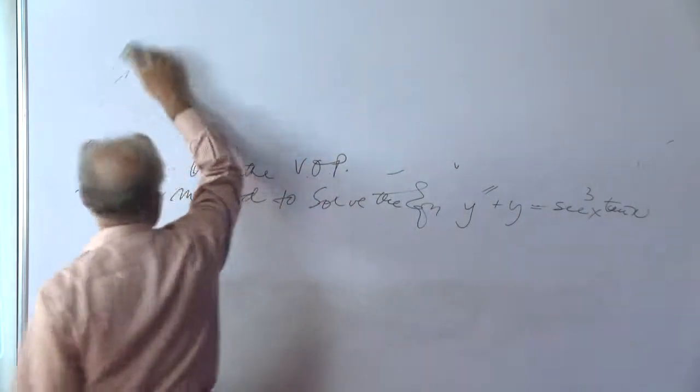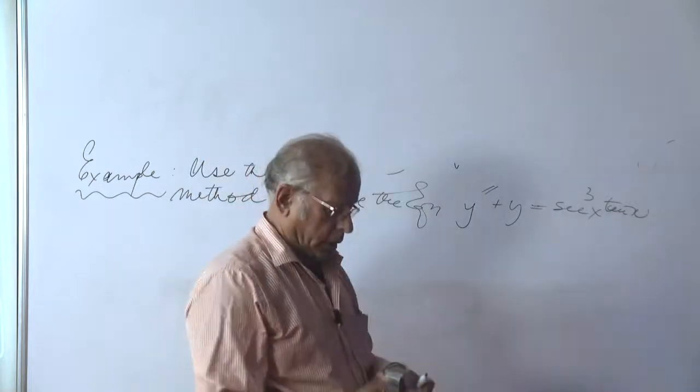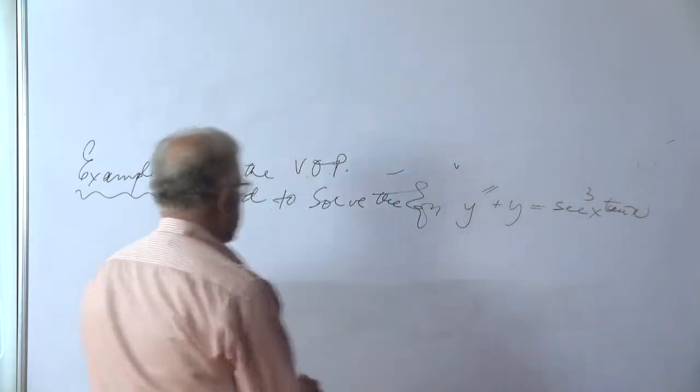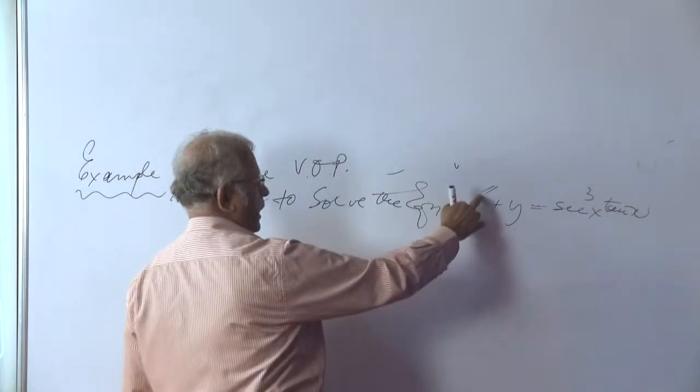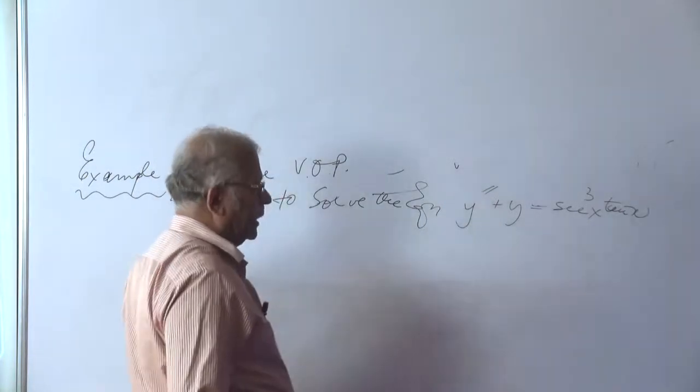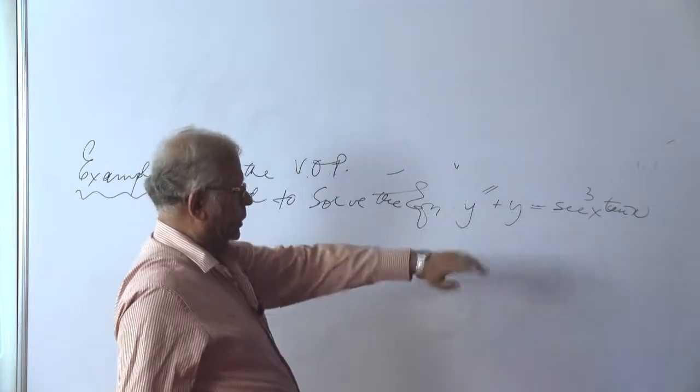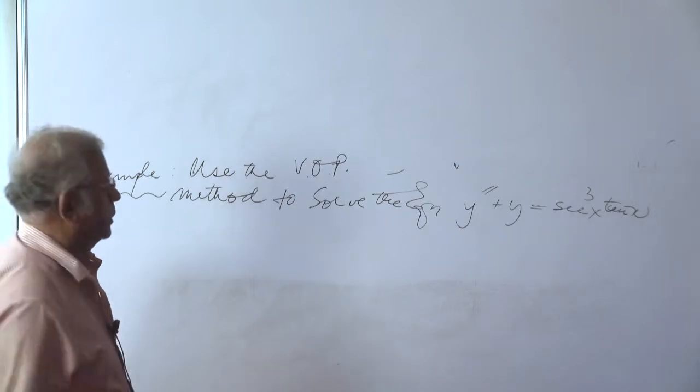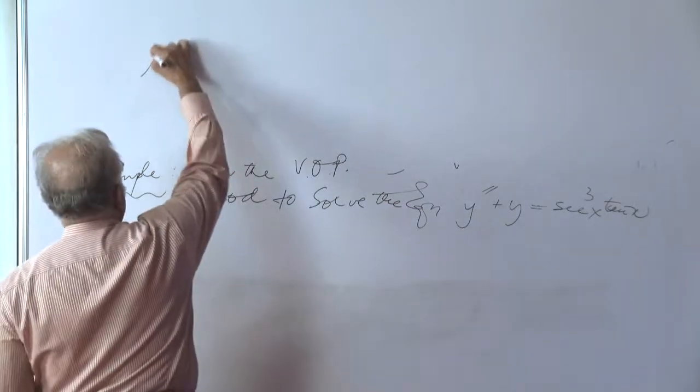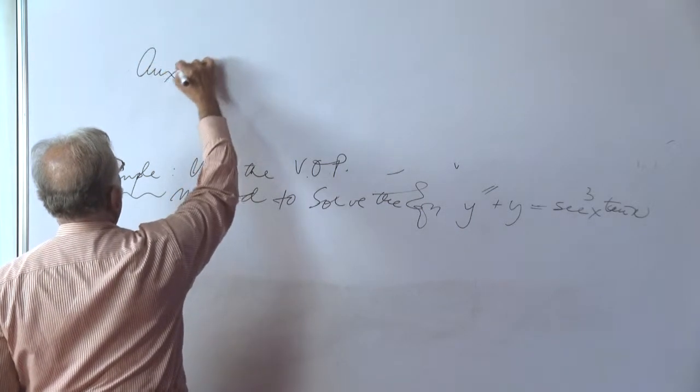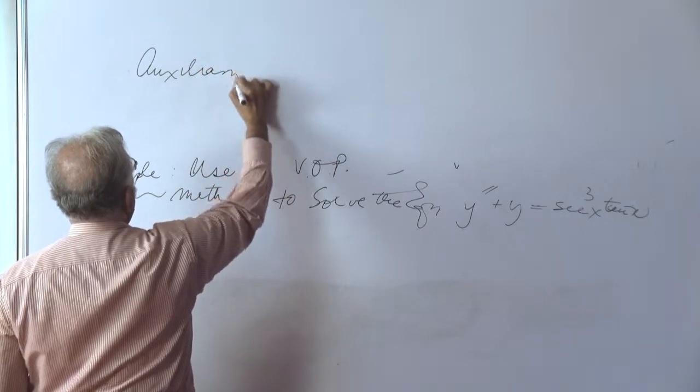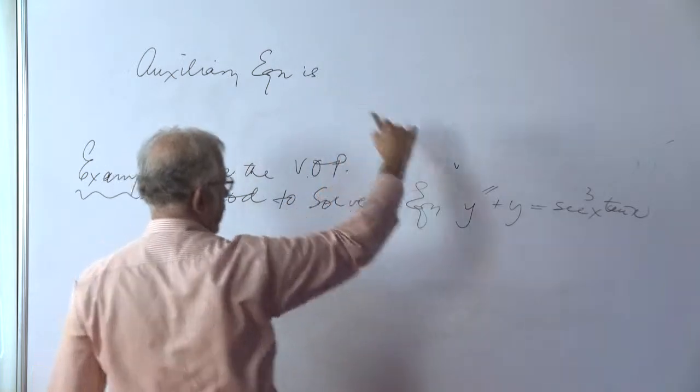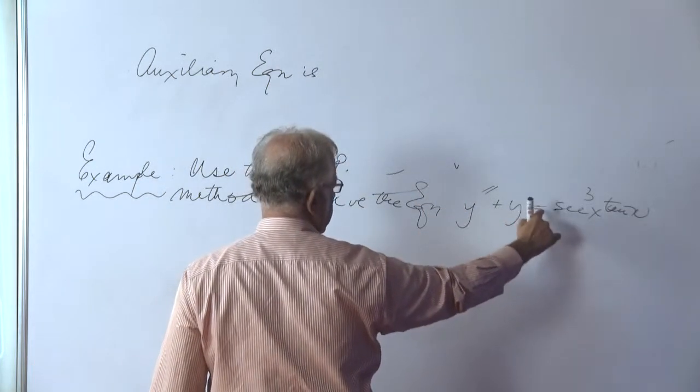The first requisite is that we need to find the complementary function y sub c. This particular equation is second order, linear and with constant coefficients. So, the first observation we make is that the auxiliary equation is nothing but m squared plus 1 is equal to 0.